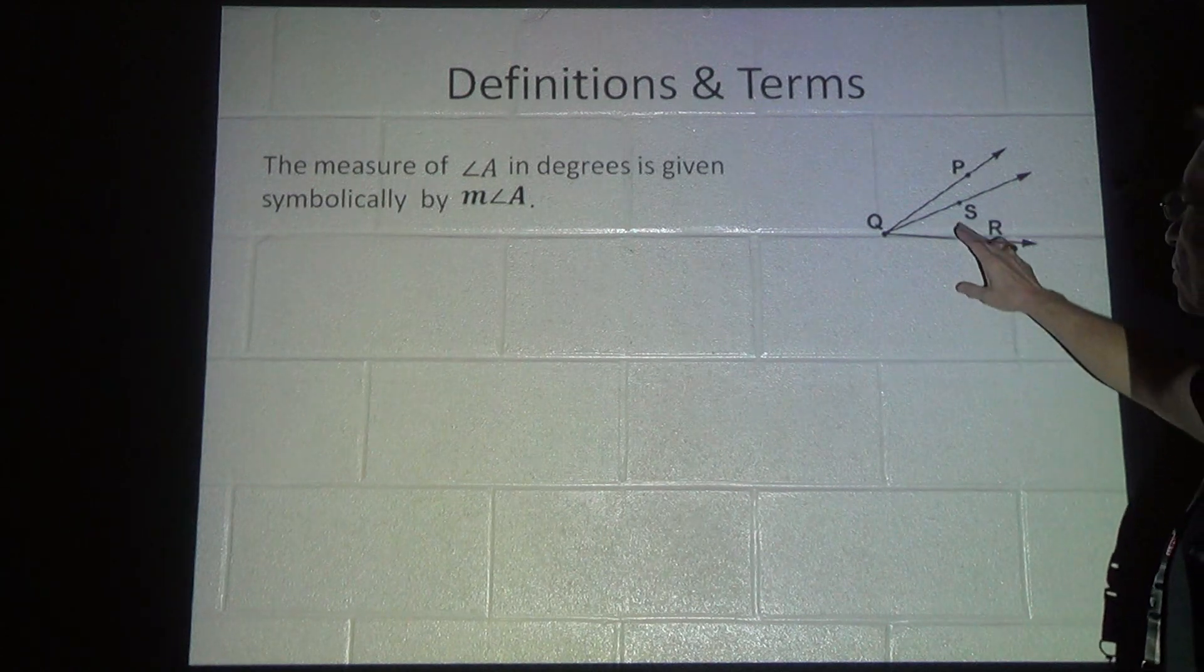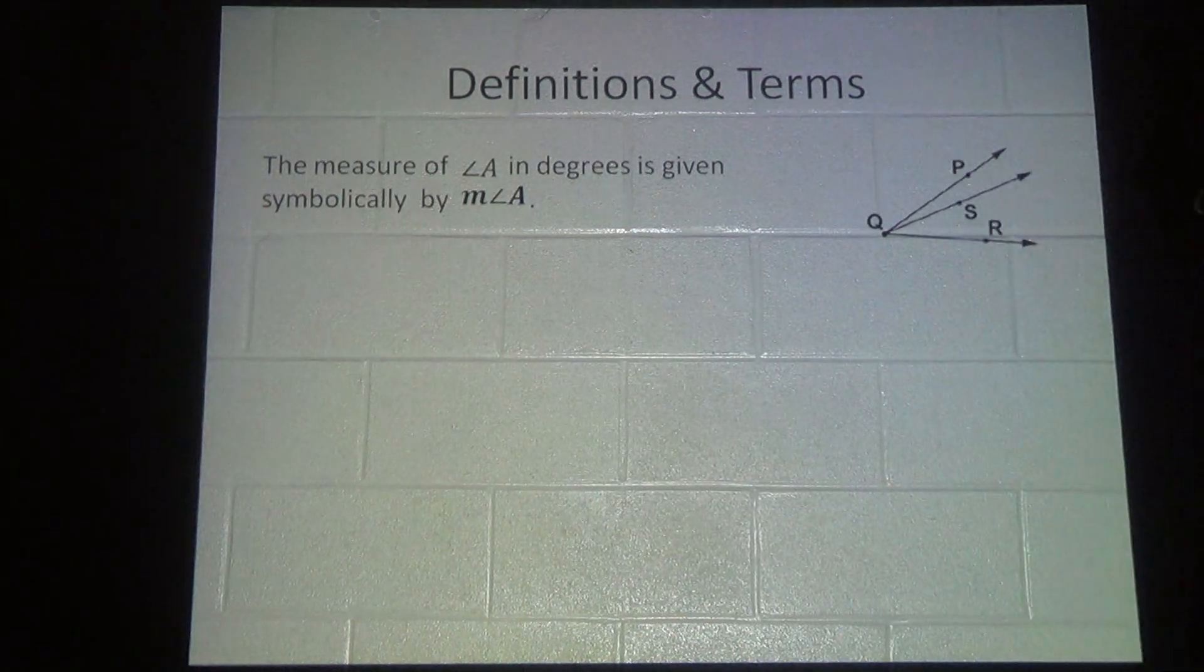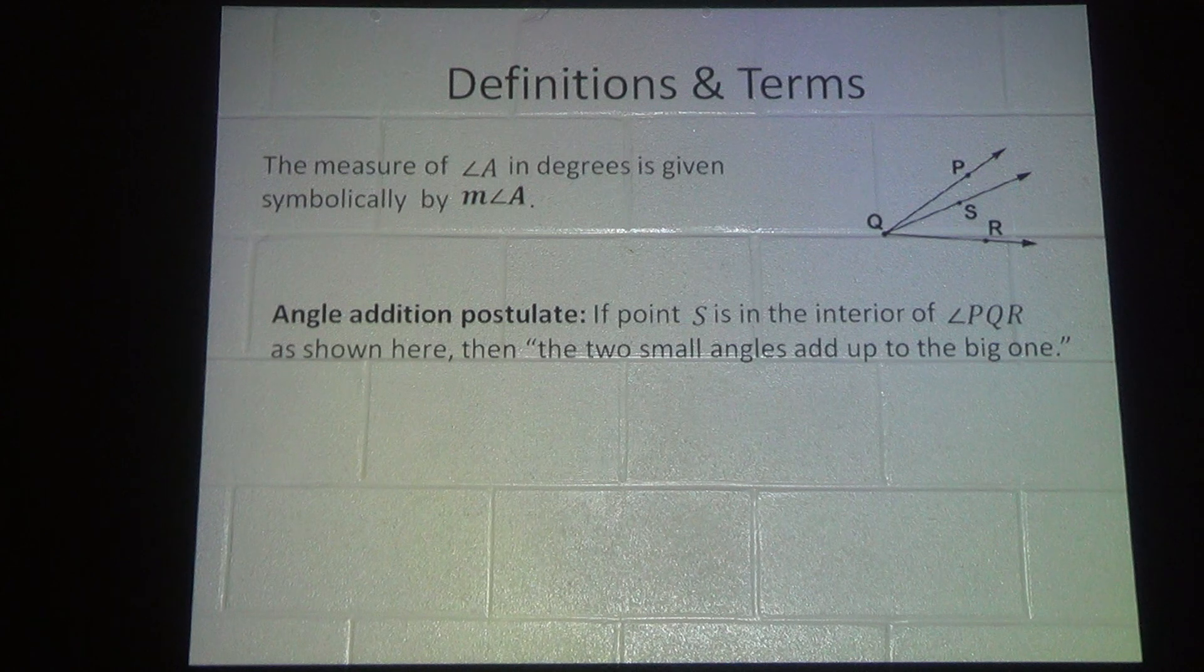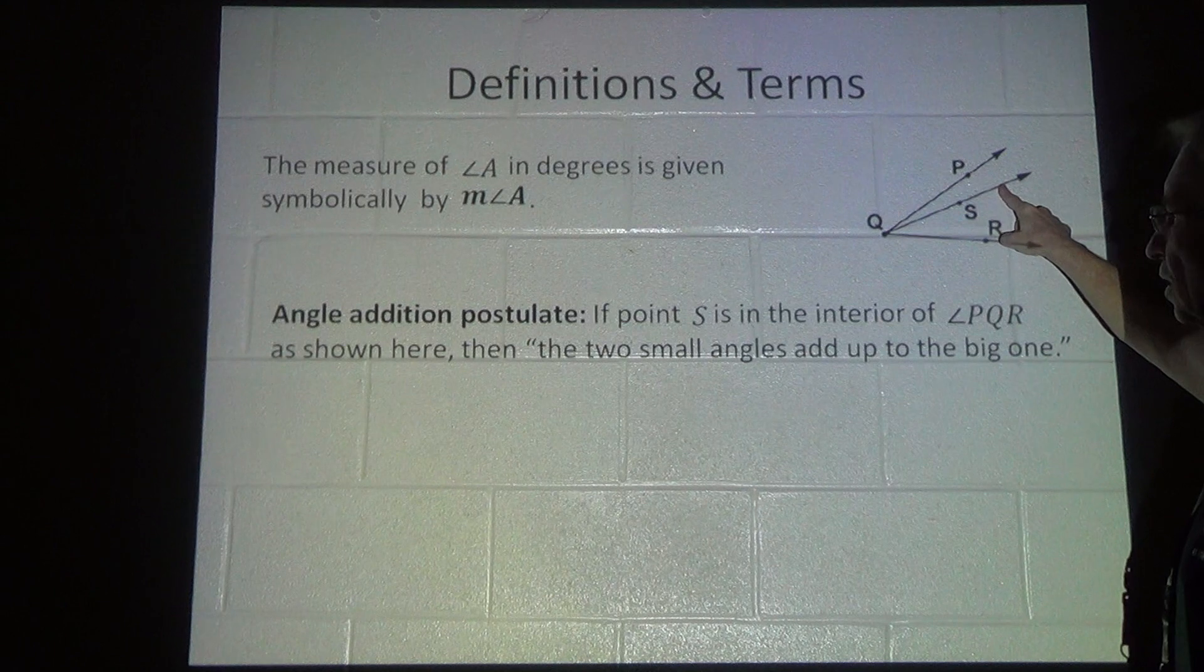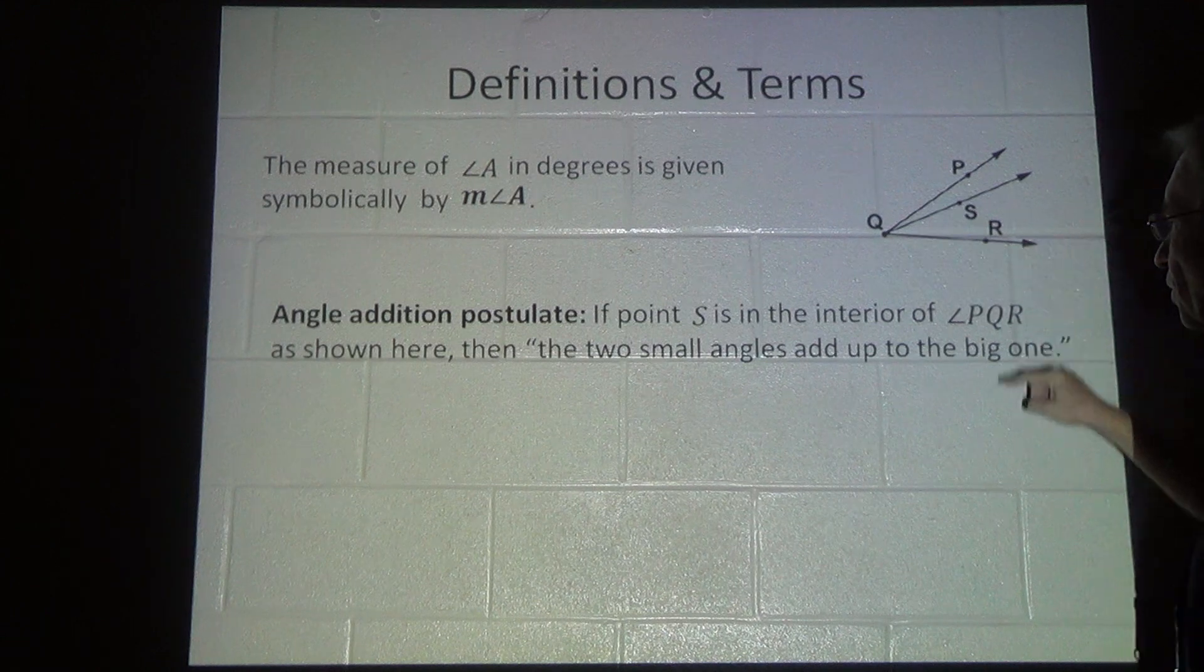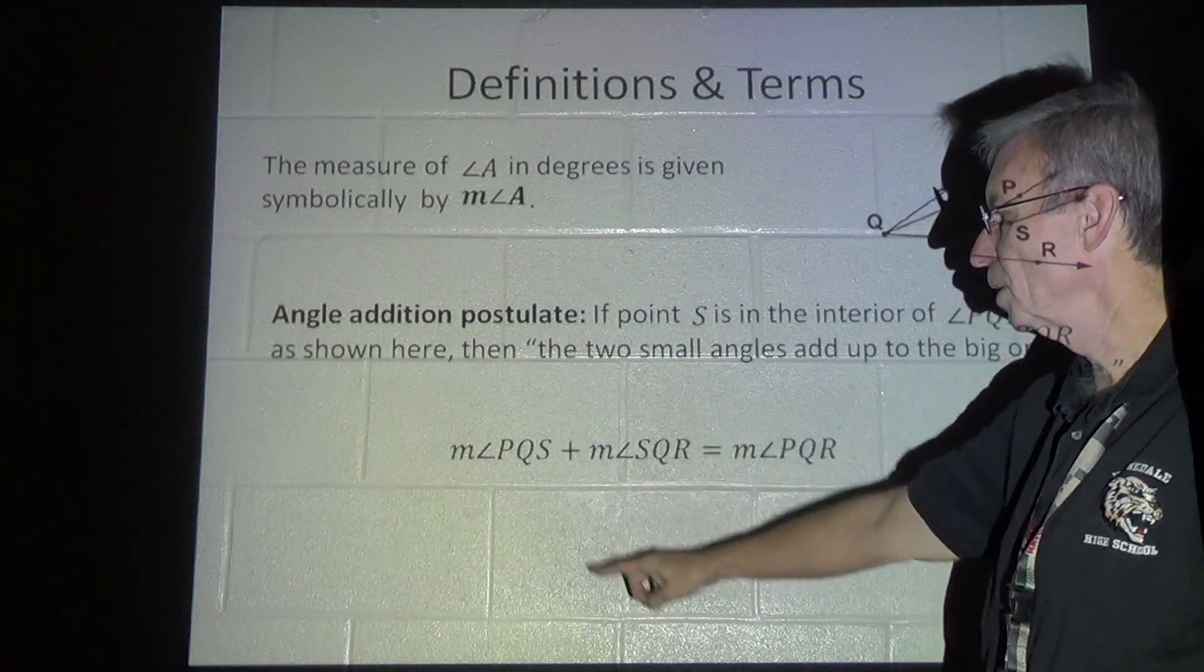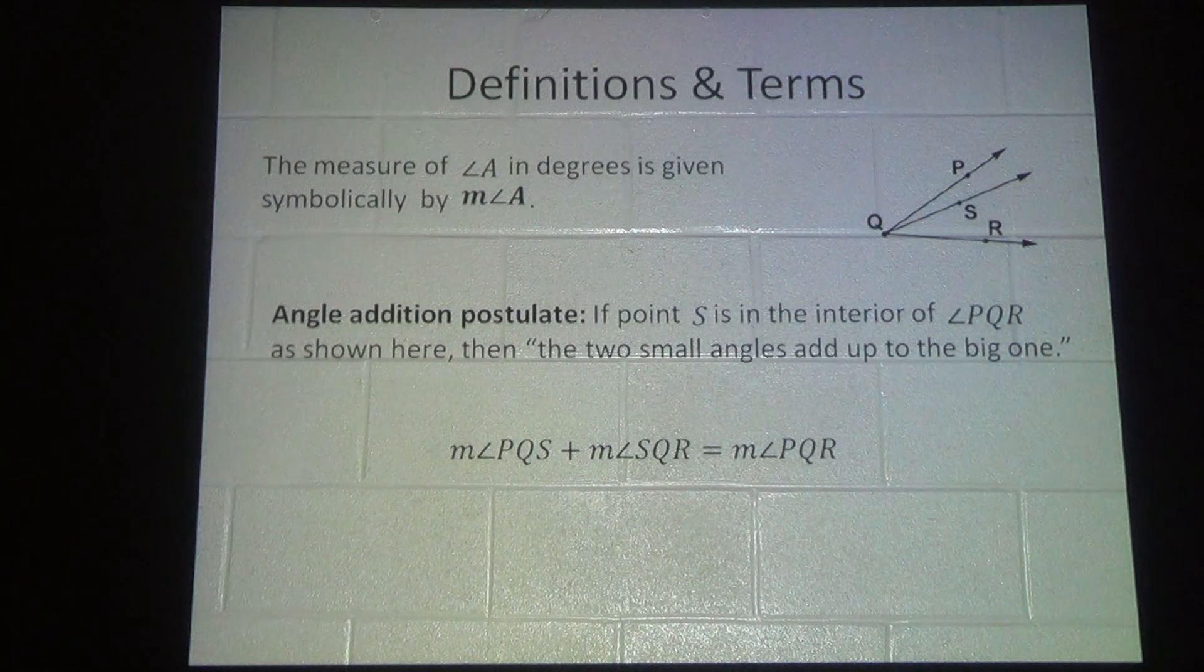The measure of angle A in degrees is represented by M in front of the name. The angle addition postulate says that if point S is on the interior of angle PQR, as shown here, then the two small angles have to add up to the total of the big angle. The measure of angle PQS plus the measure of angle SQR is equal to the angle PQR.